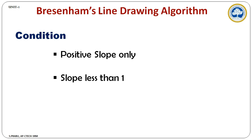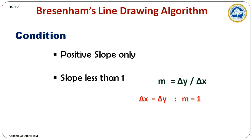Before going to the derivation part, we will consider some conditions that should be satisfied. This algorithm accepts positive slope only, and the slope must have a value less than 1. Positive slope means the starting point has a lesser value compared to the end point. The slope less than 1 means m equals delta y divided by delta x. When delta x equals delta y, m becomes 1. When delta x is less than delta y, m becomes greater than 1. When delta x is greater than delta y, m becomes less than 1.